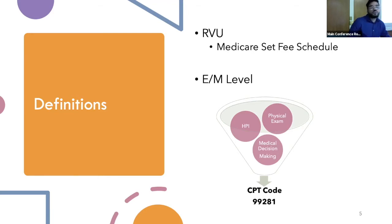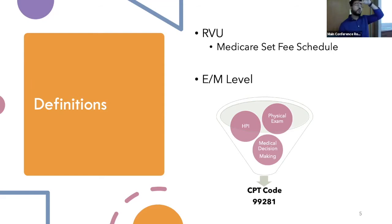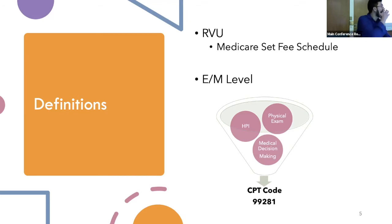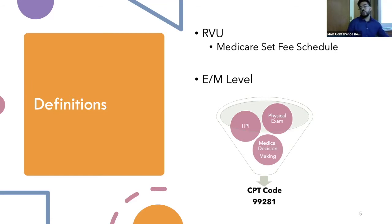Before RVUs were used, Medicare paid for physician services using something called the UCR, or the Usual, Customary, and Reasonable — basically, whatever the physician decides to charge, Medicare is going to pay. That definitely led to payment variability. In 1989, the Omnibus Budget Reconciliation Act enacted a Medicare fee schedule. As of 2010, there are around 7,000 distinct physician services that are covered.